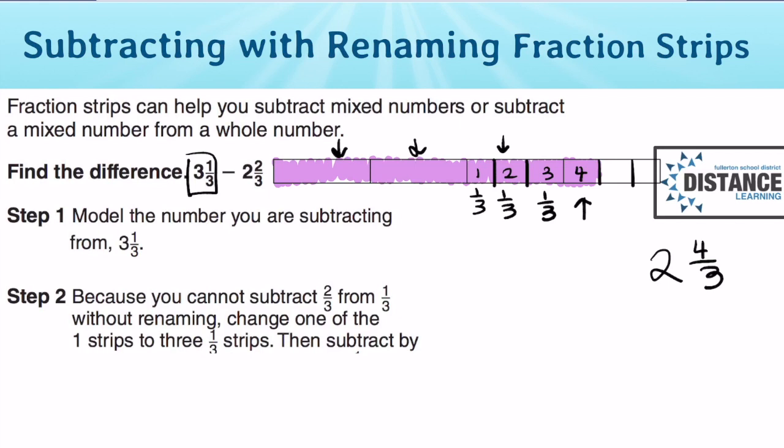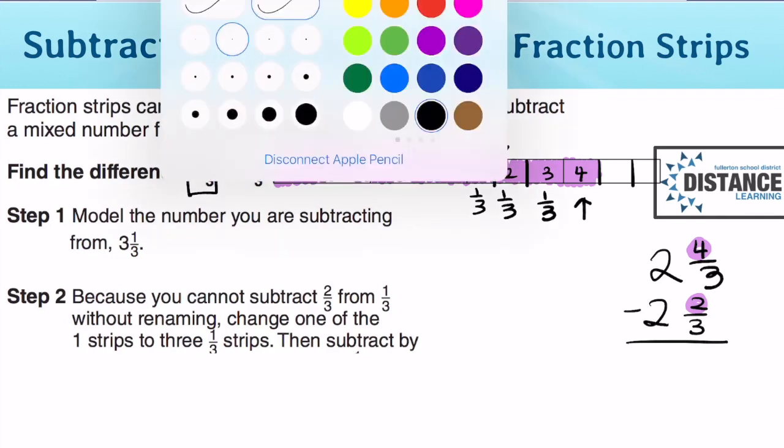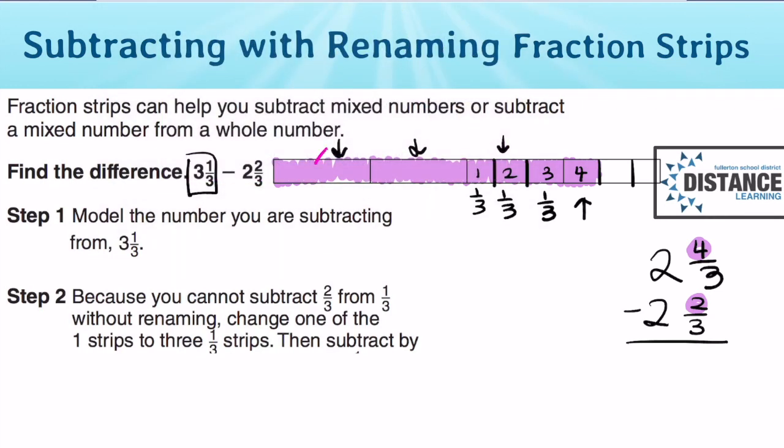Now we can take away 2 and 2/3 from 2 and 4/3, which is the same as 3 1/3, because 4 is now bigger than 2. In order to take away 2 and 2/3, we want to remove 2 wholes and we're going to remove 2/3. So that means 1 part, 1 part, so that's 2 parts. Now we're left with 2 parts, which is 2 over 3, because there's 3 parts in a whole, so my answer is 2/3.